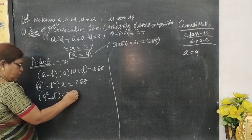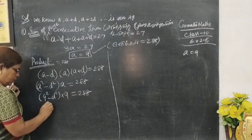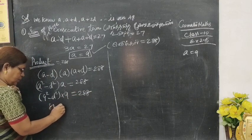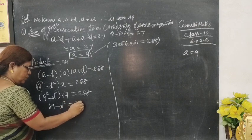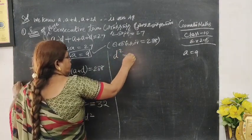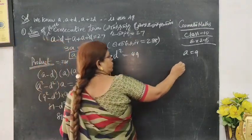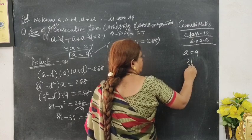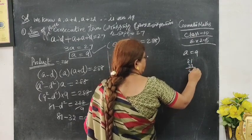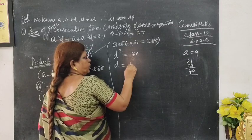9 squared minus d squared, so 81 minus d squared equals 32. Therefore d squared equals 49. 81 minus 32 gives 49, so d equals plus or minus 7.